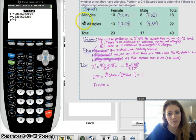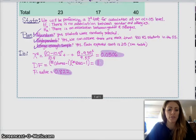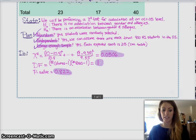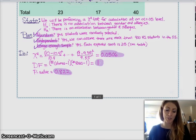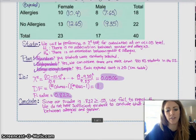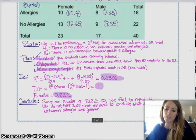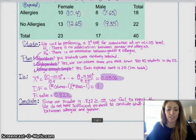And then we just conclude in context. Just make sure you include all of those values on your sheet. And then we're going to conclude in context, and since our p-value is so large, the probability of getting the values that we did in our sample, assuming that the null hypothesis is true, is 80%, which is a huge number, which means we fail to reject the null hypothesis. So, we want to say something like the following, since our p-value, 0.822, is greater than or equal to 0.05, we fail to reject the null hypothesis. We do not have sufficient evidence to conclude that there's an association between allergies and gender.